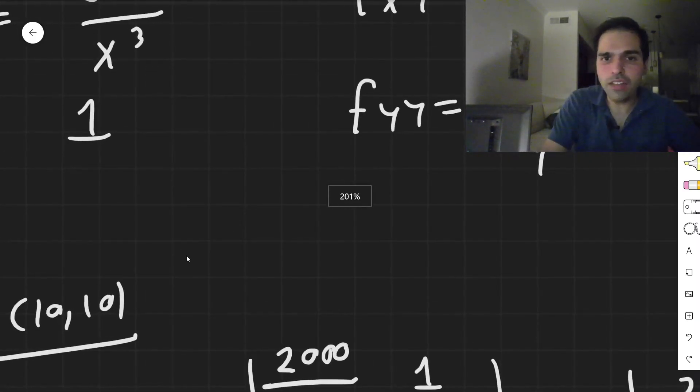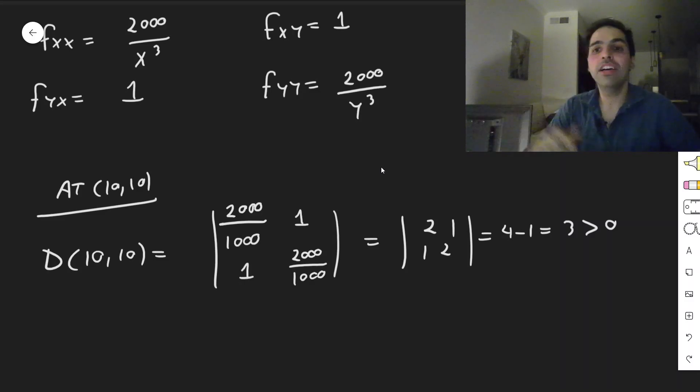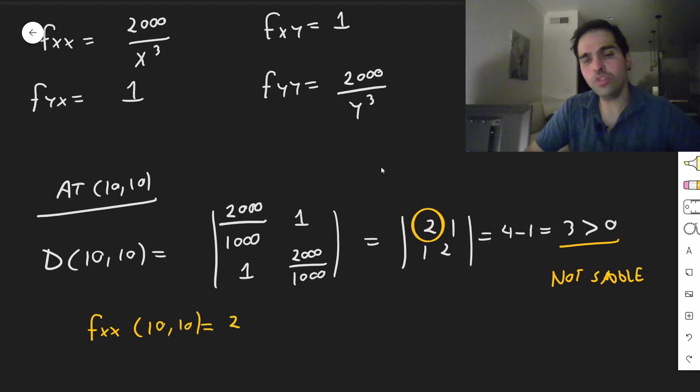So if it's positive, it already means it's not a saddle point. If you found negative, you could have said just simply a saddle point, but because it's positive, it's not a saddle. And to figure out if it's a max or a min, you just need to look at this first entry, which is fxx. So fxx at 10, 10 equals 2, which is positive. And just like in single variable calculus, where the positive second derivative indicates minimum, this also indicates that 10, 10 is a minimizer.